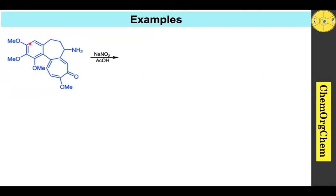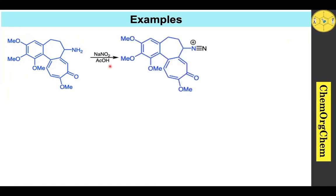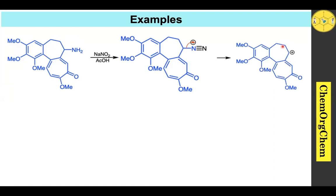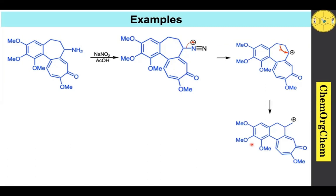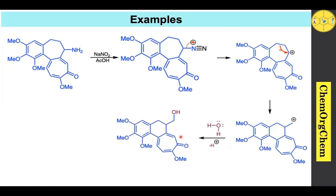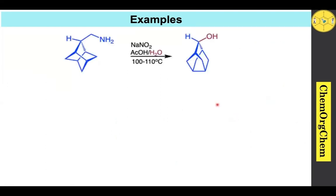Now let's see a series of problems for ring contraction. When treated with sodium nitrite and acetic acid, the corresponding diazonium ion is generated, which quickly loses nitrogen gas to give the corresponding carbocation center. The carbon atom is exactly at the anti-periplanar position, so ring contraction takes place, giving a new carbocation center, which is readily trapped by a water molecule to give the corresponding alcohol as the product.